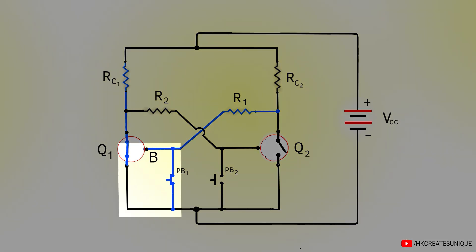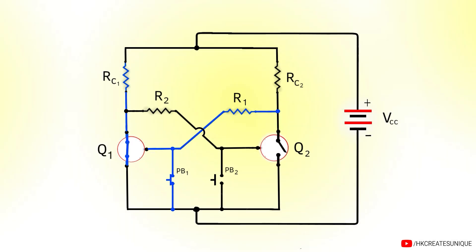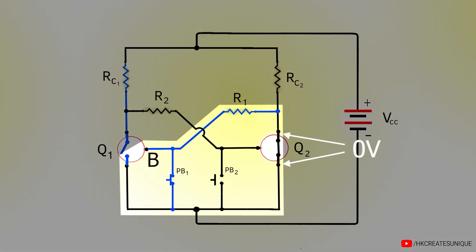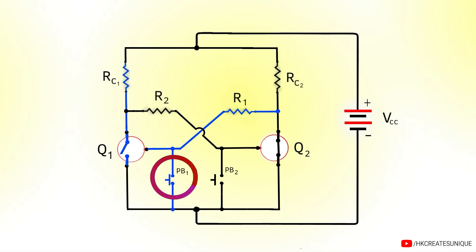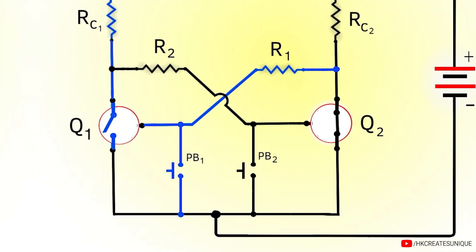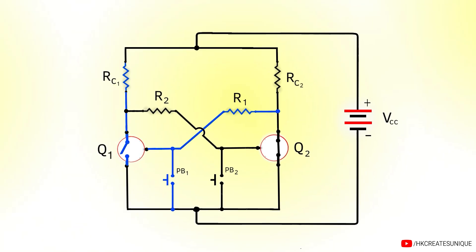Pressing the first push button shorts the base and emitter terminals and turns off Q1. Now that Q1 is off, current easily flows through the base path and Q2 turns on. Because Q2 is on, 0 volts is applied between the base and emitter of Q1, so even if the button is released, Q1 remains off. This is the second stable state: Q1 is off and Q2 is on.